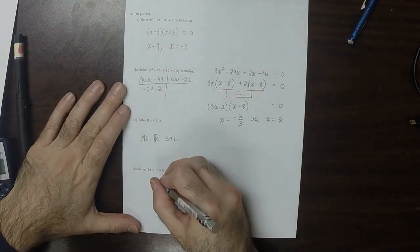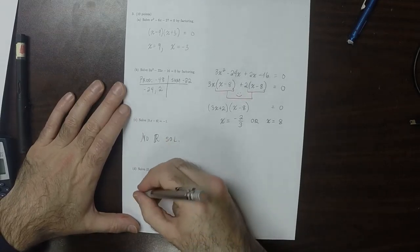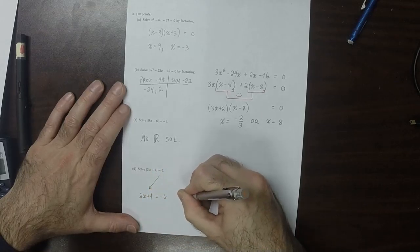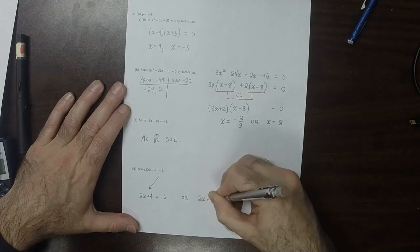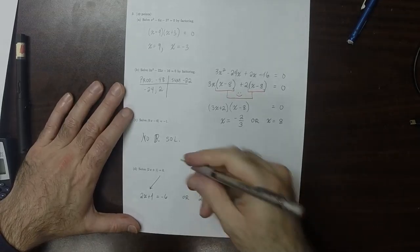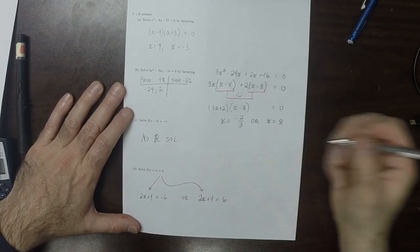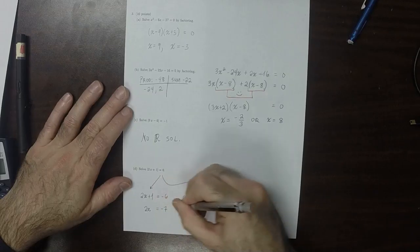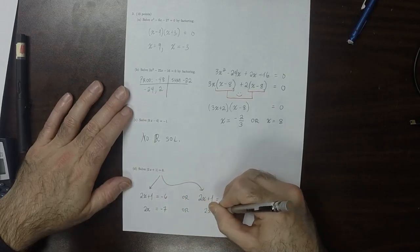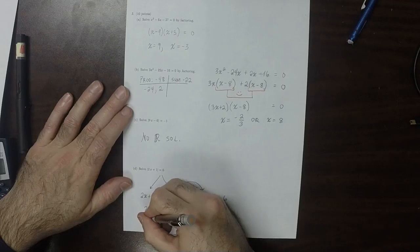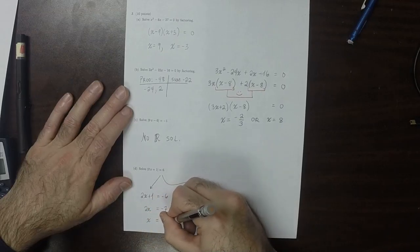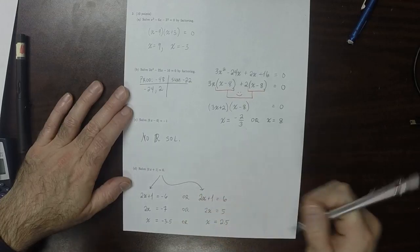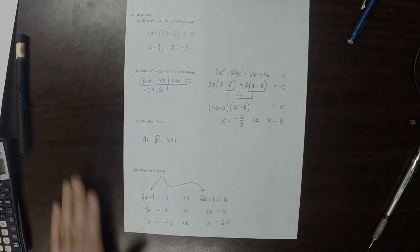As for this one, that equation is satisfiable and it splits into two pieces. 2x plus 1 is either negative 6 or 2x plus 1 is positive 6. So 2x is negative 7 or 2x is 5, so x is negative 3.5 or x is 2.5. That's the answer.